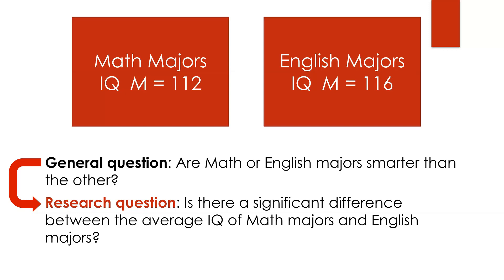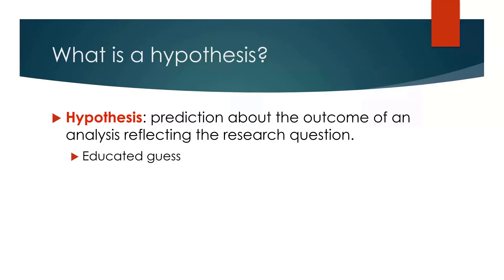So how can I begin to answer this question? What I need to form is a possible answer to this question that I can put to the test. This possible answer to a research question is what we call a hypothesis. A hypothesis is a prediction about the outcome of an analysis reflecting the research question. So the question is: is there a difference between math and English majors' average IQ? A hypothesis could say yes, there is a difference between their average IQs. That's a prediction — an answer to the question about what the outcome of testing that question will be.